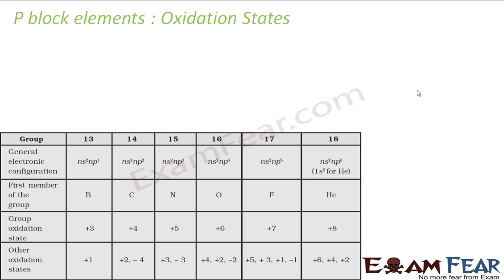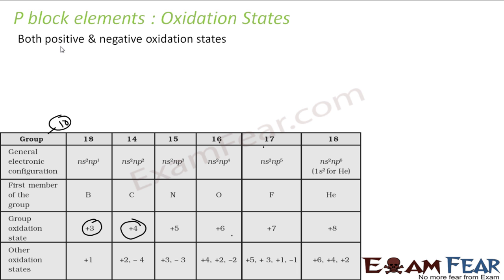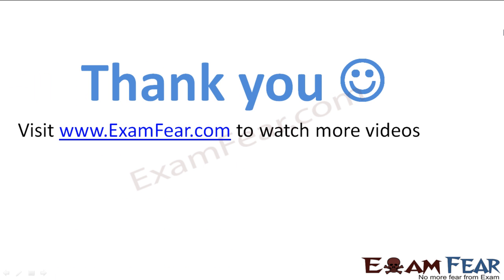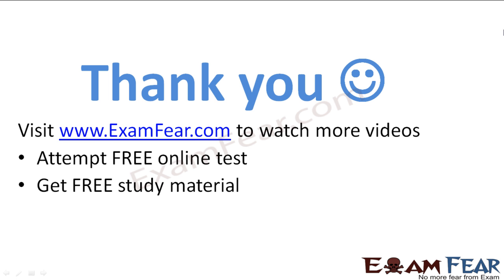Now we'll talk about oxidation states. The maximum oxidation state equals the group number minus 10: group 13 gives +3, group 14 gives +4, group 15 gives +5, group 16 gives +6, group 17 gives +7, and group 18 gives +8. Note that P-block elements have both positive and negative oxidation states, which will be discussed further. Thank you, visit examfear.com to watch more videos.